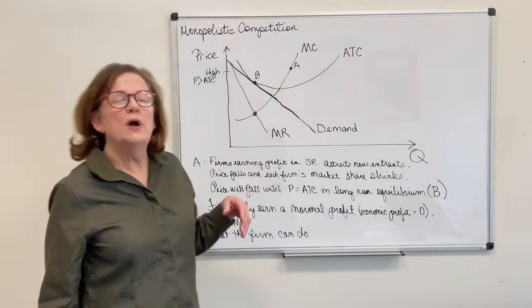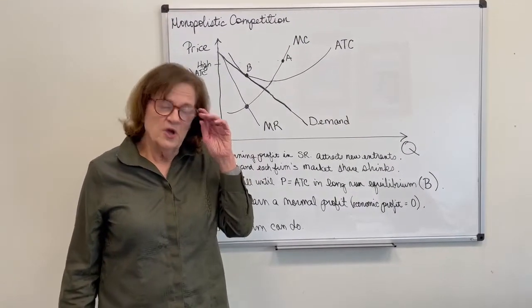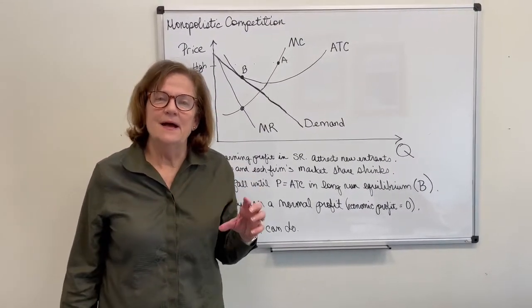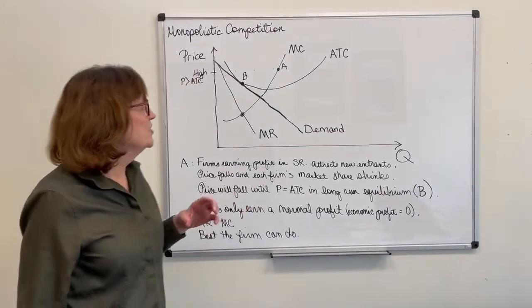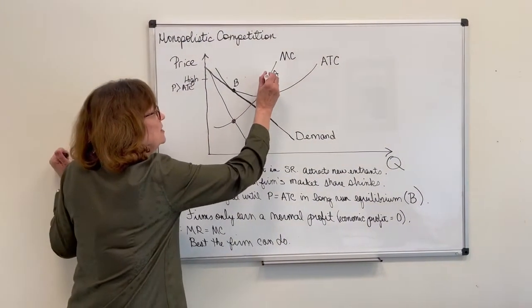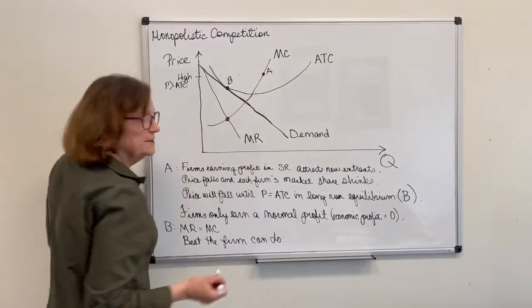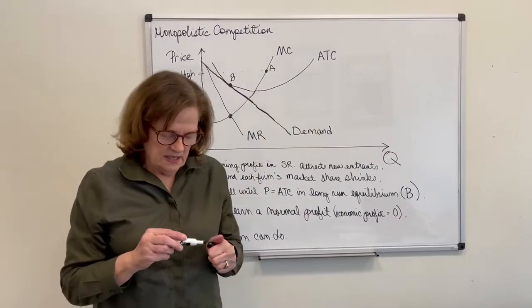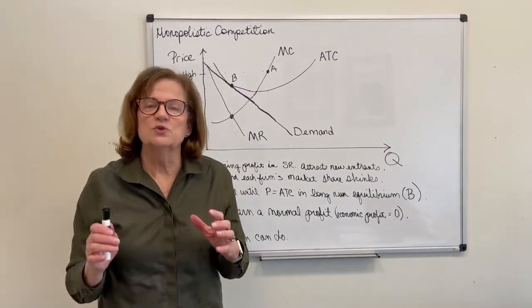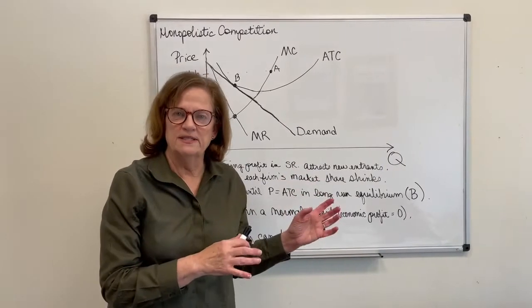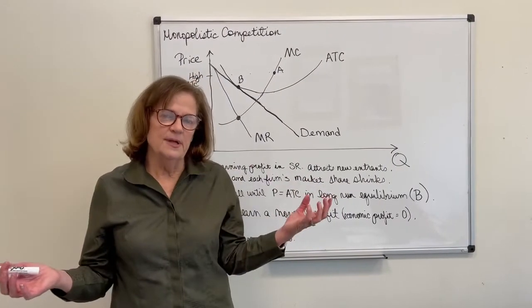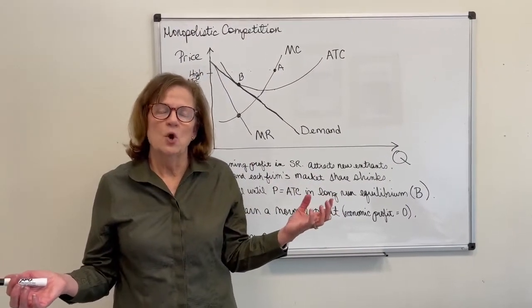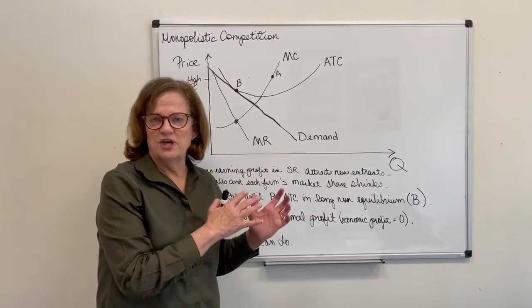So in the short run, if firms are making an economic profit—that is, their price exceeds their average total cost—then other businesses will join the hamburger market and that increase in supply in the hamburger market will decrease everybody's market share.